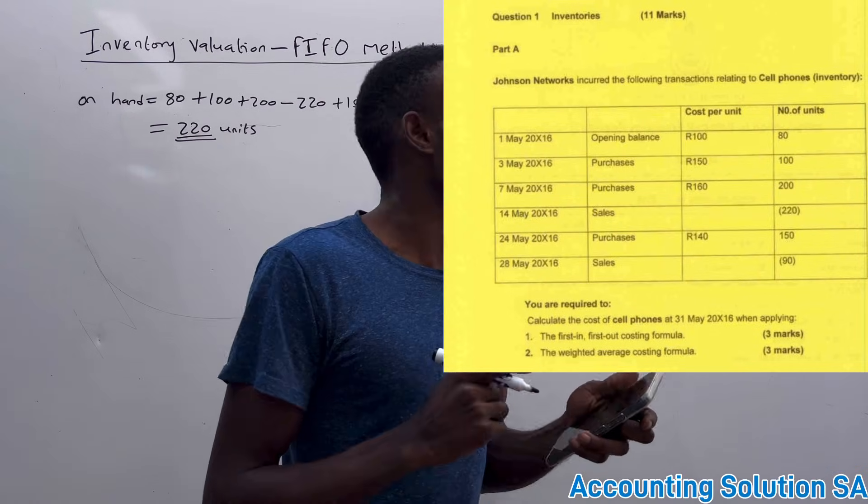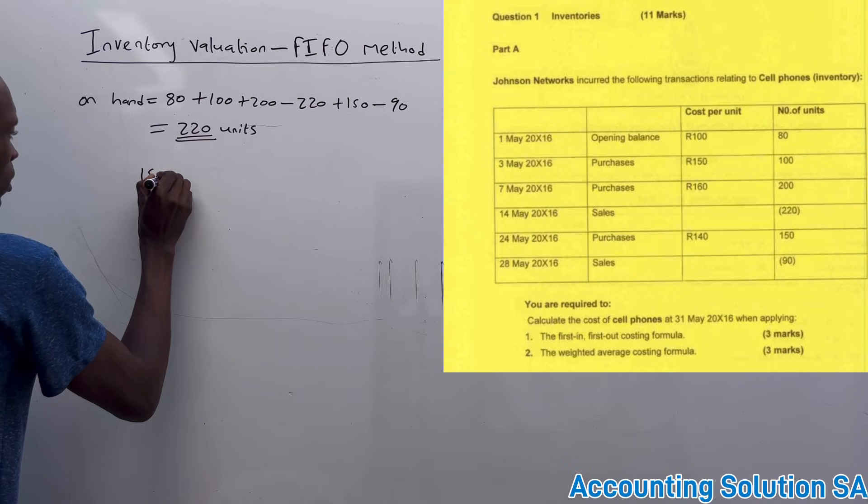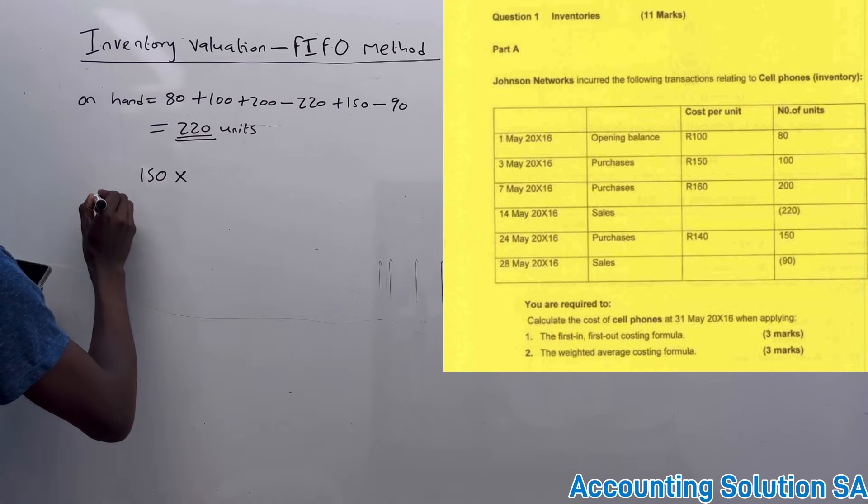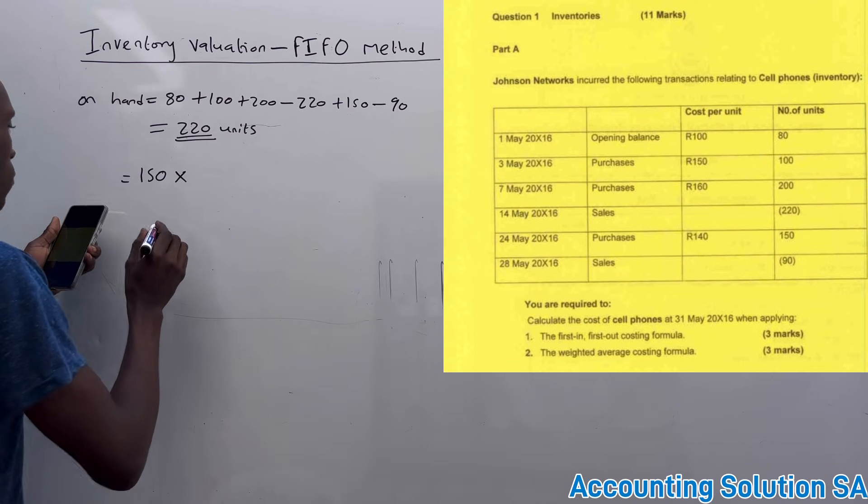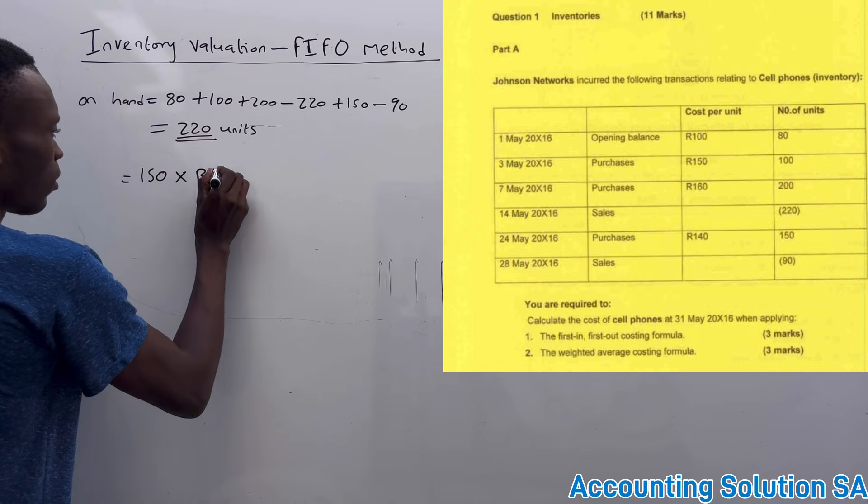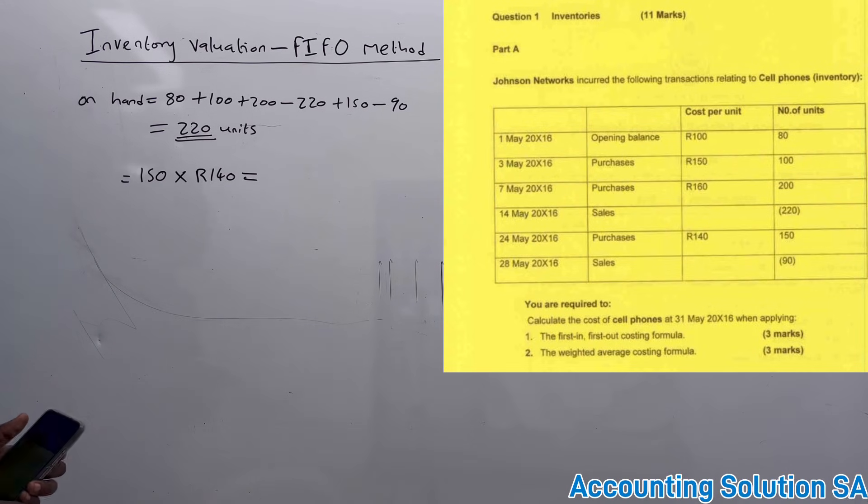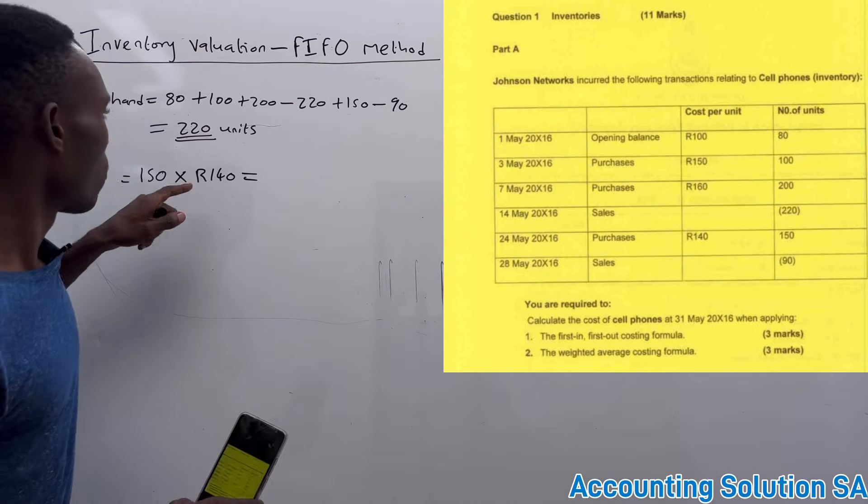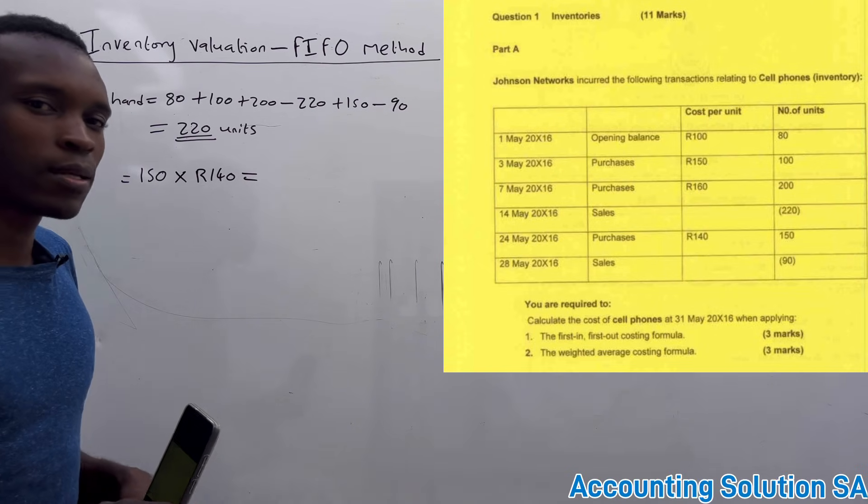We have 150 units. This 150 units was costing how much? It was costing 140 per unit, R140 per unit. Then we need to calculate and now we have a problem.